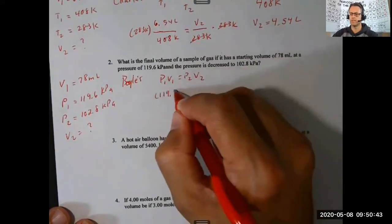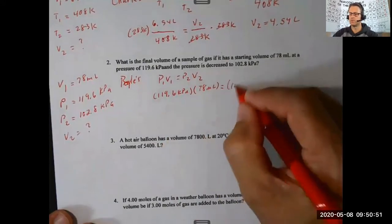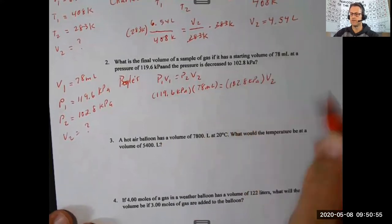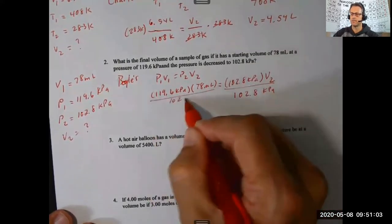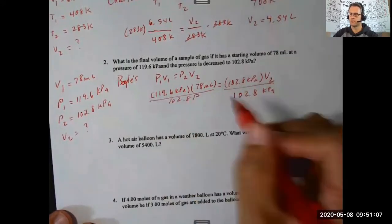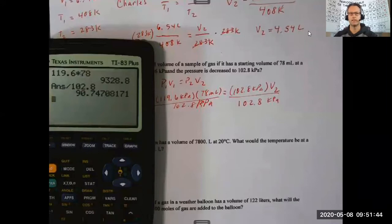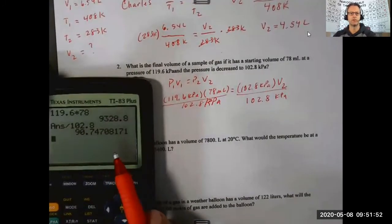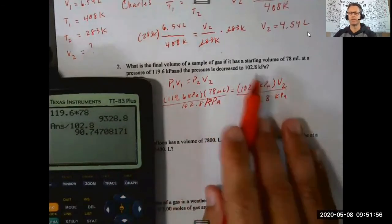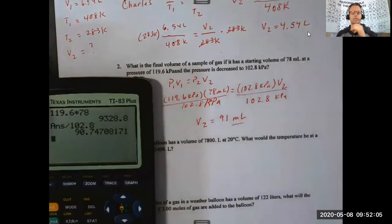Plugging in: P1 is 119.6 kilopascals, V1 is 78 milliliters, P2 is 102.8 kilopascals, and V2 is unknown. I divide both sides by 102.8 kilopascals to isolate V2. When I calculate that I get 90.74708... — I can't be that precise. Looking back at the problem, I have two sig figs, so I round to 91 milliliters.